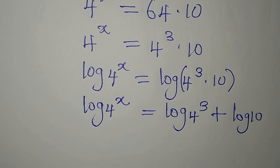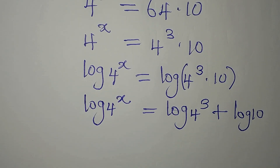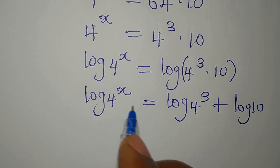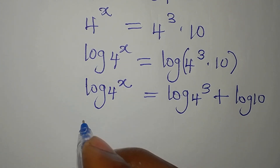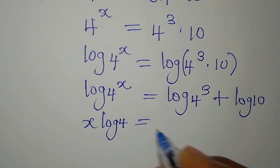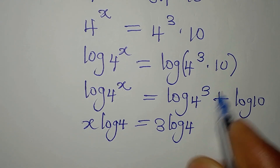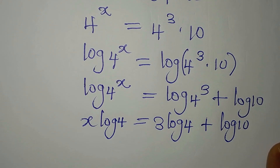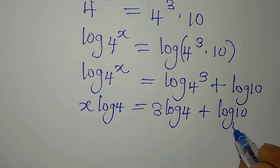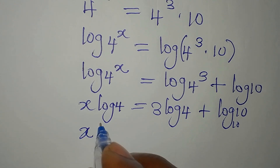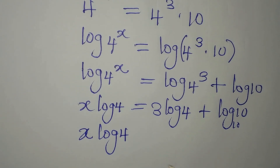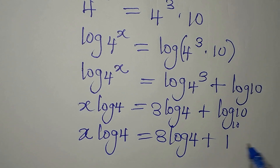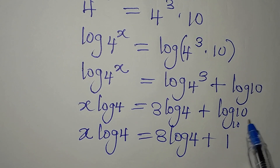Since these are multiplied, we add the logs. The power can come down in front, so we have x log 4 equals 3 log 4 plus log 10. And log 10 to base 10 is 1, so log 10 equals 1. Therefore x log 4 equals 3 log 4 plus 1.